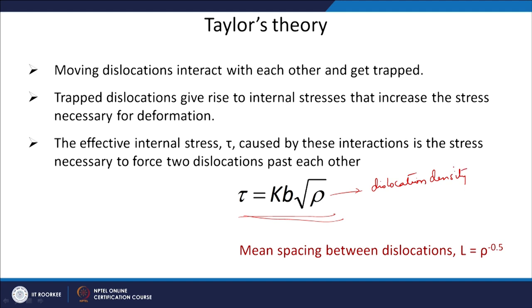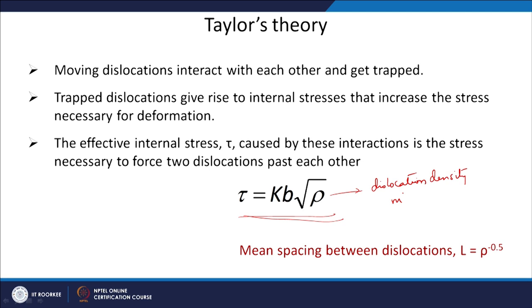Dislocation density ρ is a line defect measured in length per volume, giving units of m⁻². The mean distance between dislocations is 1/√ρ — so when density is high, the spacing between dislocations is small. During cold working, more plastic strain requires more dislocations. Dislocation density increases from around 10⁴–10⁶ per mm² in an annealed structure up to 10¹¹–10¹⁵ per mm² after heavy cold working.